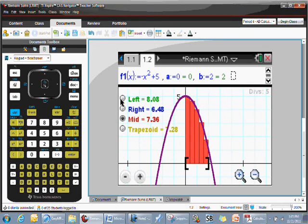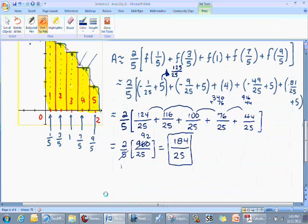And it's really kind of fascinating because you can actually see the different rectangular approaches. In this particular case, we're going with the red option, which is the midpoint, which gives us an answer of 7.36. And if we recall from our word document here, 184/25.